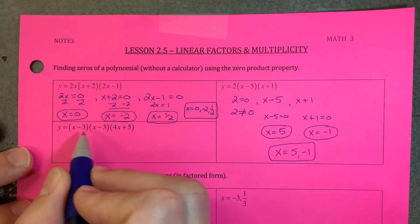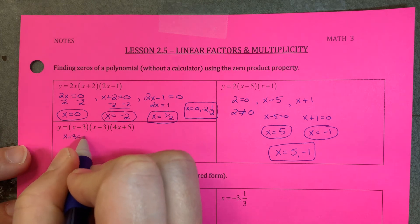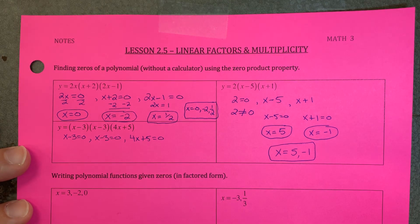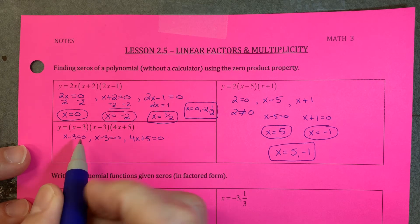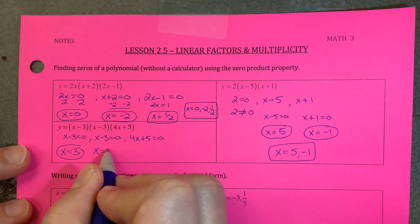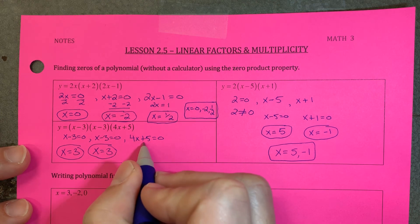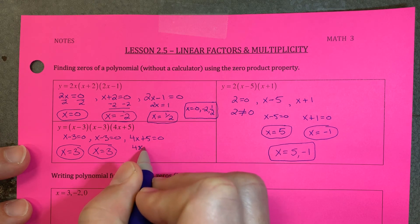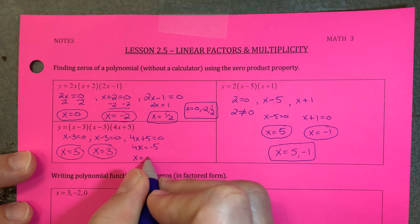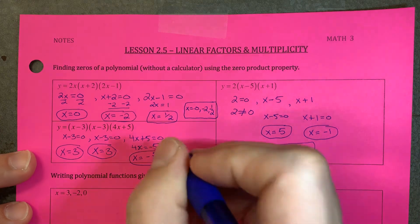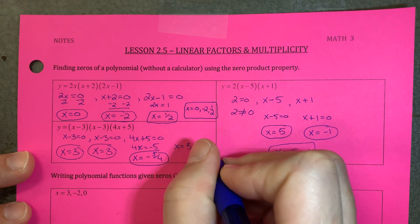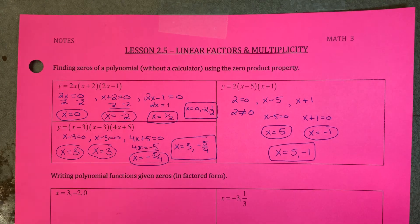For the last example, set each expression equal to 0: x minus 3 equals 0 appears three times, and 4x plus 5 equals 0. Solving x minus 3 equals 0 gives x equals 3 — it's a repeated zero. For 4x plus 5 equals 0, subtract 5 and divide by 4: x equals negative 5 over 4. So your zeros are x equals 3 (written once, though it has multiplicity 3) and negative 5 over 4.